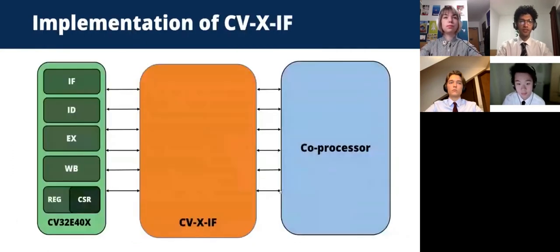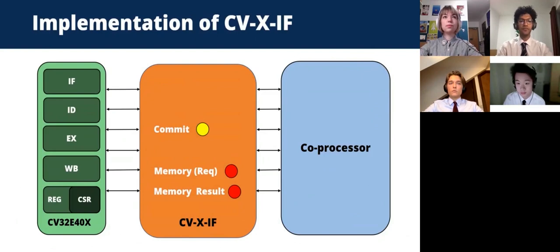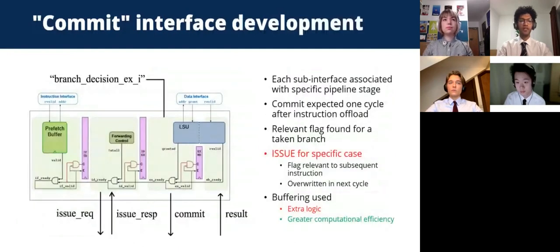The extension interface consists of a number of sub-interfaces, each implemented in RTL to a different extent. The commit and memory sub-interfaces were specifically targeted due to their limited functionality and relevance to our project. The commit interface is responsible for signalling the coprocessor whether an offloaded instruction may continue execution or should be killed — for example, if a branch was taken in the preceding instruction. Each sub-interface is associated with a specific pipeline stage: offloading in decode, committing in execute, and results returned during writeback. The commit interface expects committing one cycle after instruction offload.